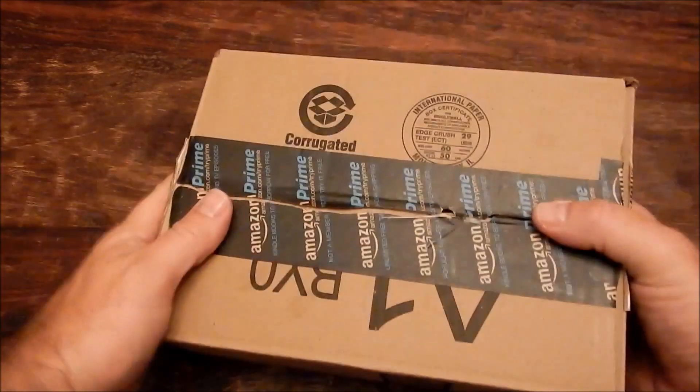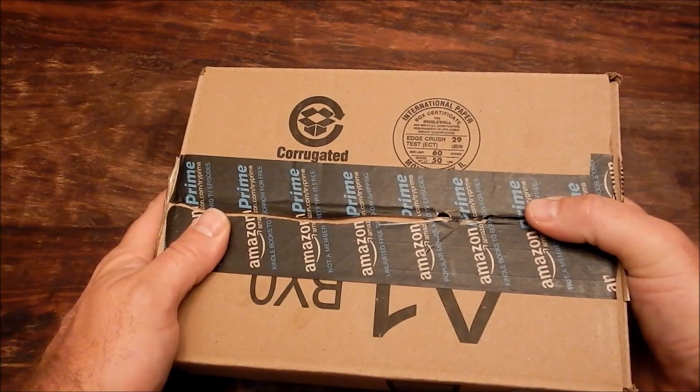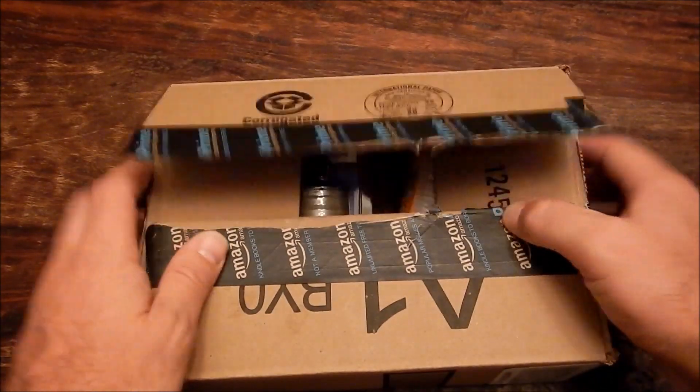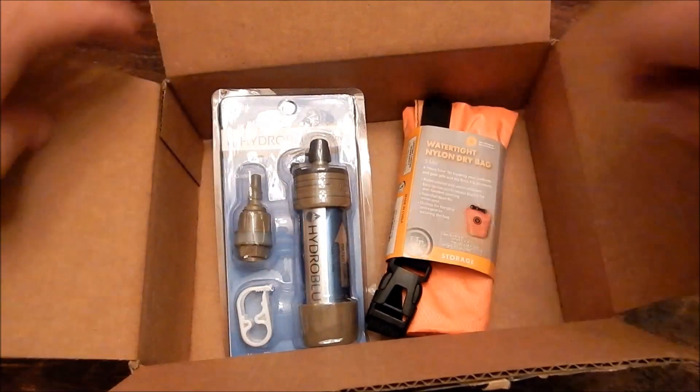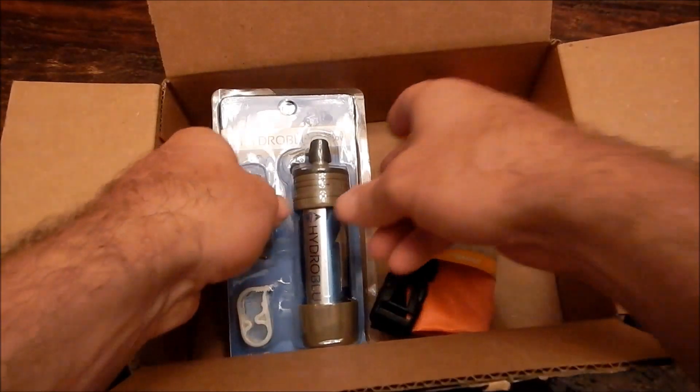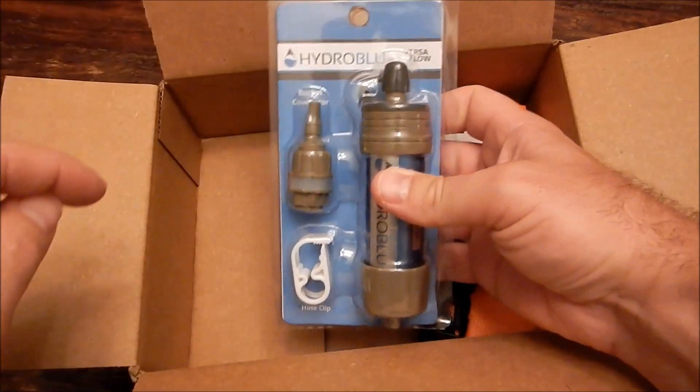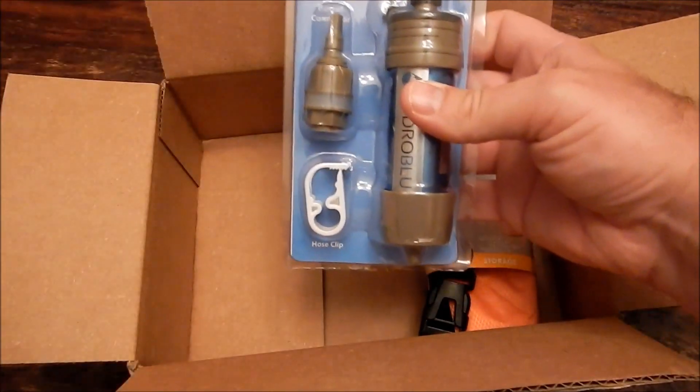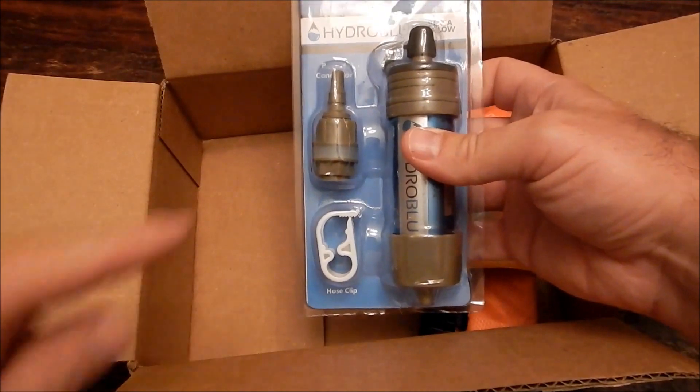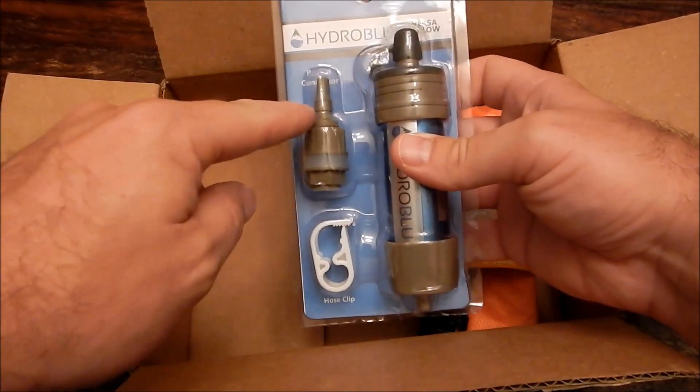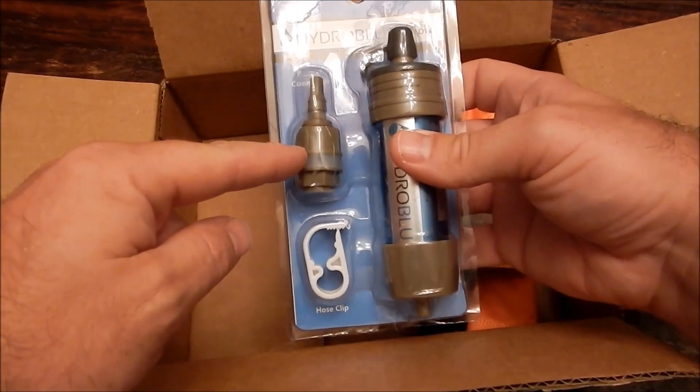Amazon delivers very quickly where I live. Check this out. So this is what you get with your purchase: you get the hydro blue Versaflow filter, it comes with the bucket connector which is basically a bulkhead fitting.